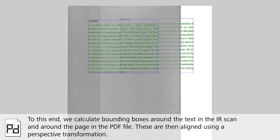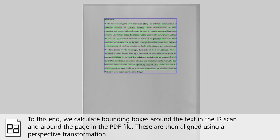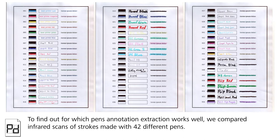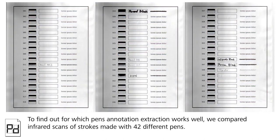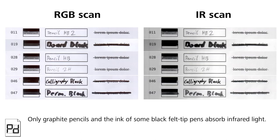To find out for which pens annotation extraction works well, we compared infrared scans of different strokes made with 42 different pens. Only graphite pencils and the ink of some black felt-tip pens absorb infrared light.